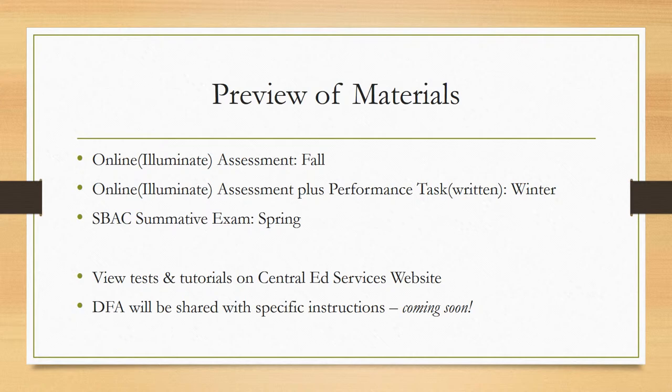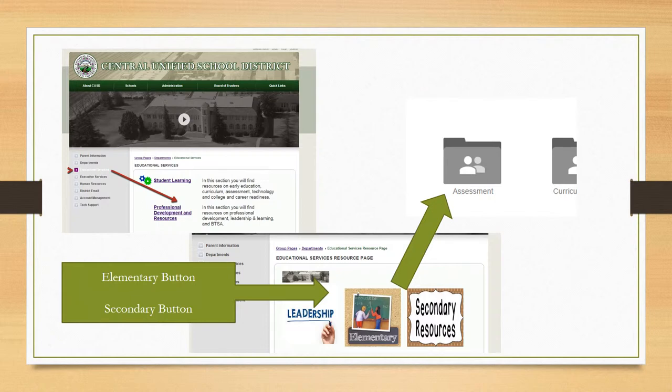You can view the tests and tutorials on the Central Ed Services website. You'll also have a DFA shared with you that is being developed right now specific to your grade level — it has helpful hints for each grade-specific feature, and that's being done in the REA office. All resources we're going to talk about can be found off the Central website. Go to Ed Services, select the Professional Development and Resources link, then select your grade span. As long as you're logged into our Central Google account, you can access all the files and folders, including the assessment folder where all these resources are located.